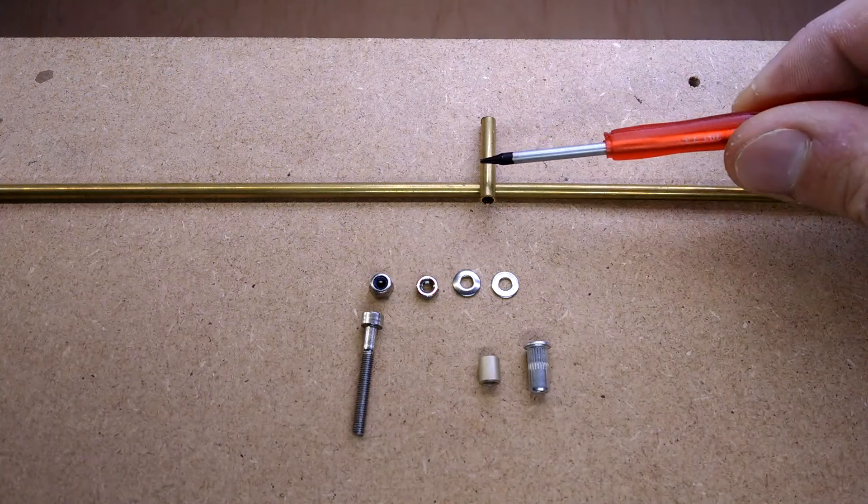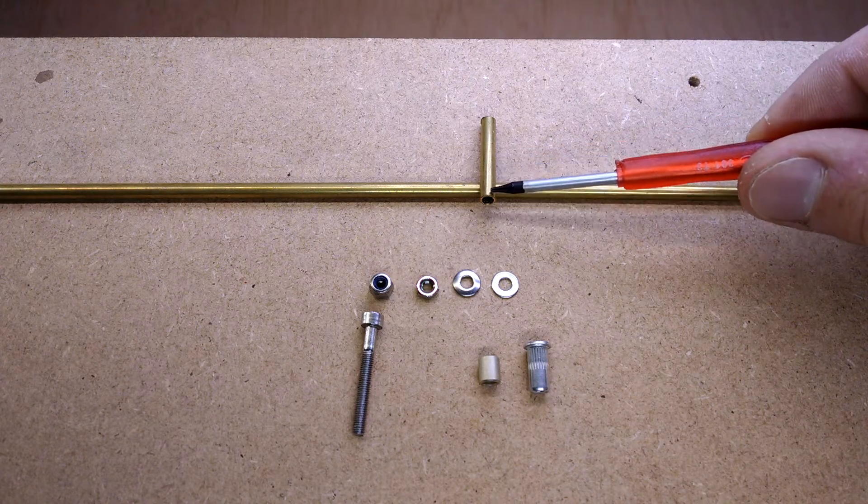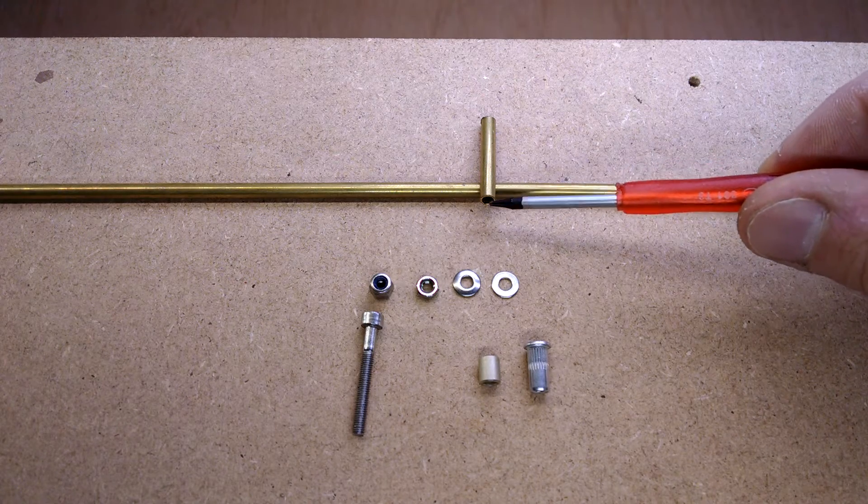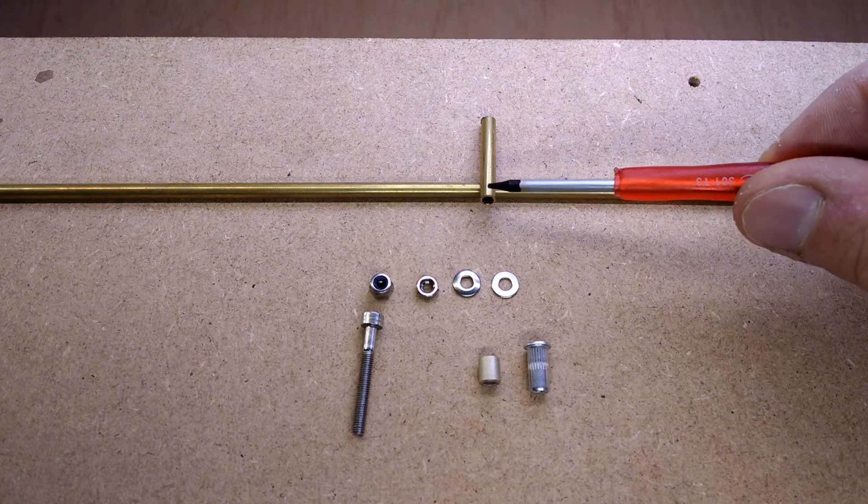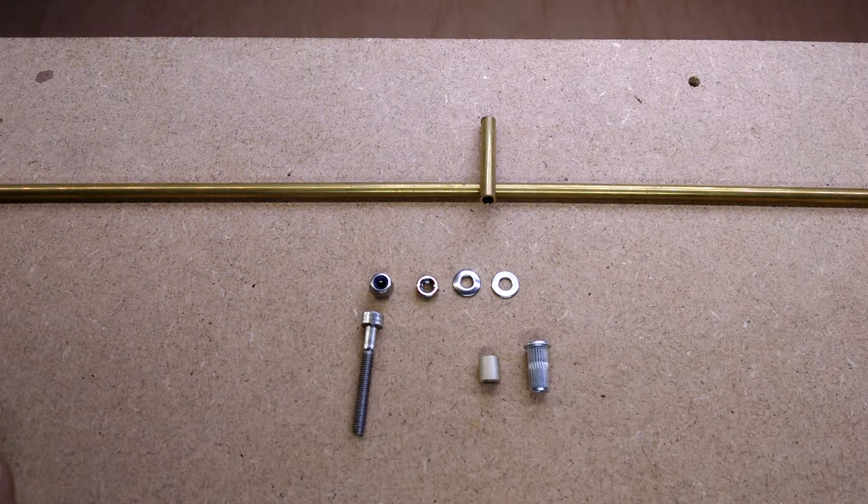And the final thing I looked at was some of this 4mm outside diameter with a 0.45mm wall thickness. So that's just over 3mm internal diameter. And I'll show you what I came up with and what worked for me.